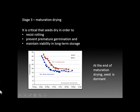As seeds develop and once they are fully developed, there's a critical third stage: maturation drying. Seeds need to go through this drying process to retain their viability over time. Some seeds remain viable in the soil for many years; others can be stored under favorable conditions for centuries. Most seeds need to be dried so that internal moisture is somewhere in the range of three to ten percent, allowing them to resist rotting, prevent premature germination, and remain viable in long-term storage.